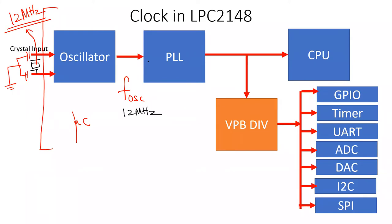The output of this oscillator frequency is fed as input to the PLL circuit, and the output of the PLL circuit is then supplied to the CPU. The clock going to the CPU is called CPU clock or C-clock. C-clock stands for CPU clock. The typical expectation is 60 MHz — this is the maximum clock speed the LPC-2148 can support. The maximum CPU clock supported by LPC-2148 is 60 MHz.